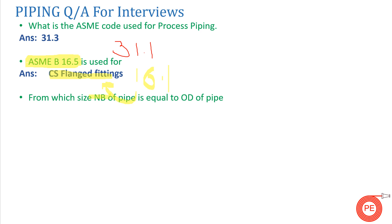The next question: from which size does the nominal bore (NB) of a pipe become equal to the outer diameter (OD) of the pipe? If you have seen the schedule table, you would know that the nominal bore is not equal to the OD for smaller sizes. But from 14 inch pipe size onwards, the NB becomes equal to the OD.